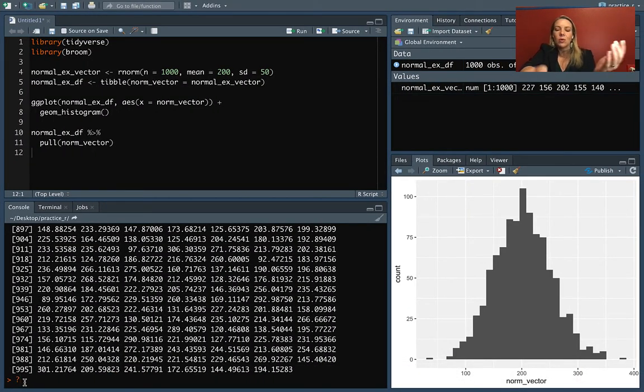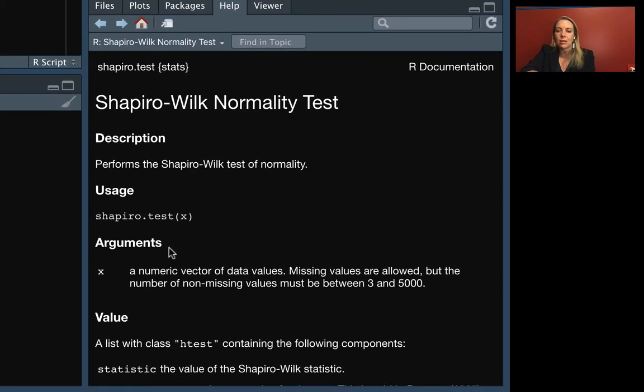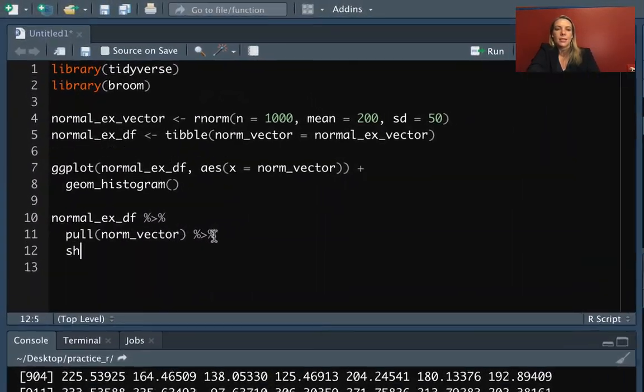Now we can pipe it directly into the Shapiro test function. If we wanted to look at that test and see what type of input it would take, we can bring up the help file. When we come down to the arguments, we can see that the only argument it takes is X and that has to be a numeric vector. So we do need to do this process of pulling out and getting into a vector format the column that we want to test.